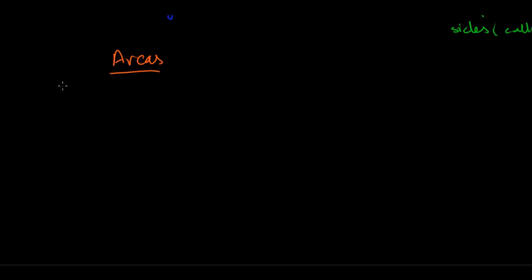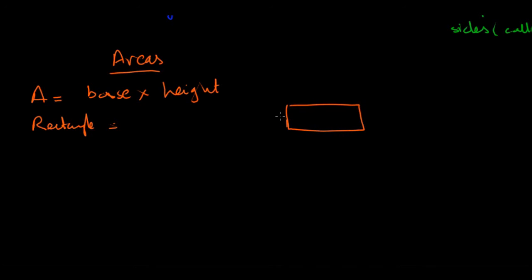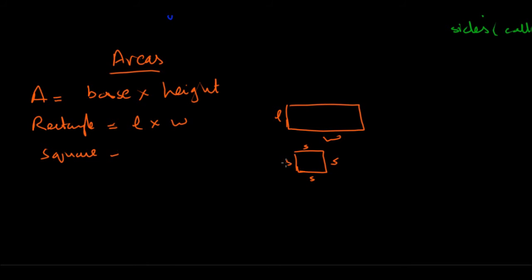Next we'll talk about areas of quadrilaterals in general. The general formula for area is base times height. For a rectangle, the sides are usually called length and width, which serve as your base and height, giving you the area as their product. Similarly for a square, since all sides are equal, you get s squared — squaring the side gives you the area of a square.